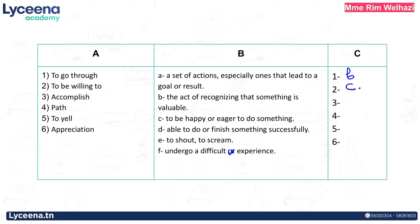To be willing is matched with C: to be happy or eager to do something. Let's move on to number three: accomplish. Accomplish is matched with D — to be able to do or finish something successfully. And path: a set of actions especially ones that lead to a goal or result, matched with A. Don't forget the phonetic transcription — the word 'path' has the 'th' sound.